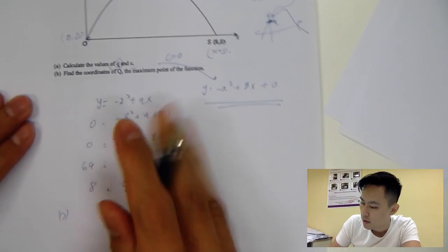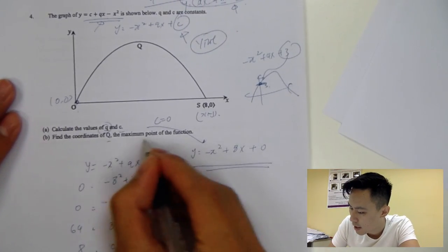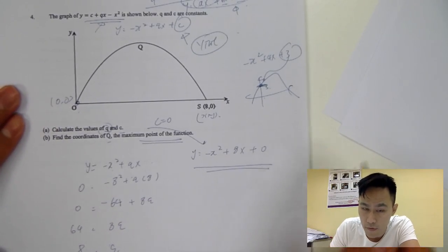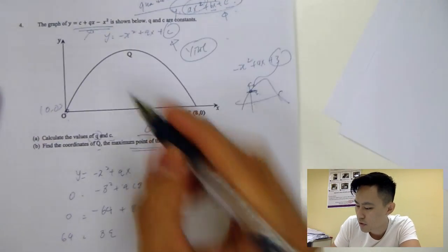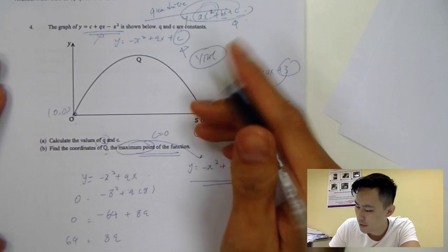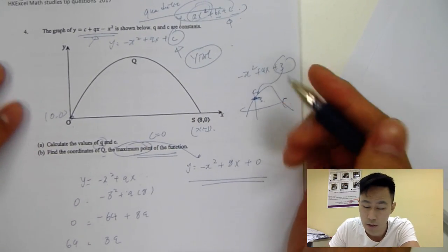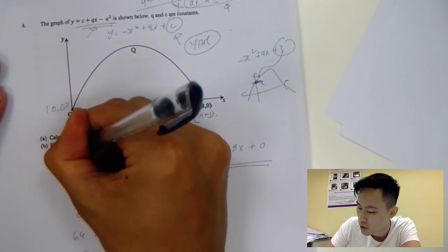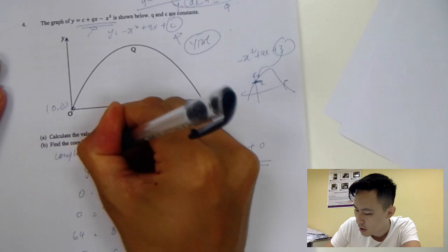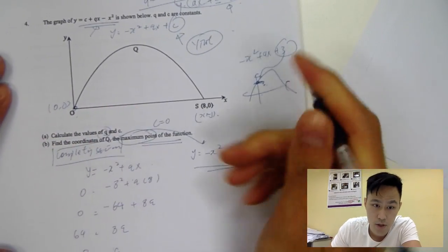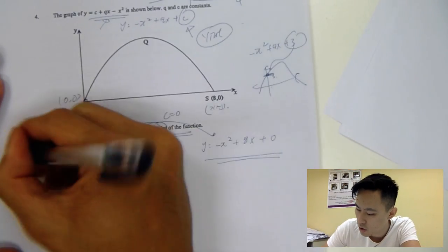And then for b, find the coordinates of q and the maximum point of the function. So understand that, my student, whenever you see maximum point, you find it quite hard to tackle this kind of question because you have to think of the completing square, right? And obviously, you don't want to do that because you have to rearrange the equation into this form.